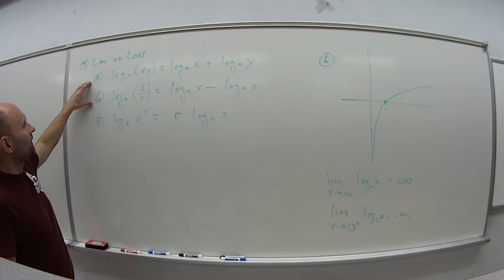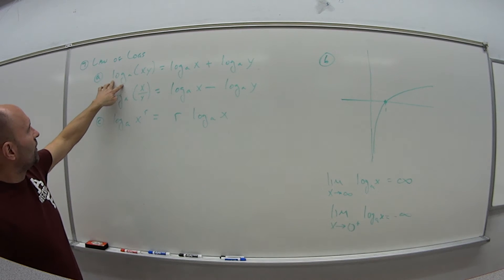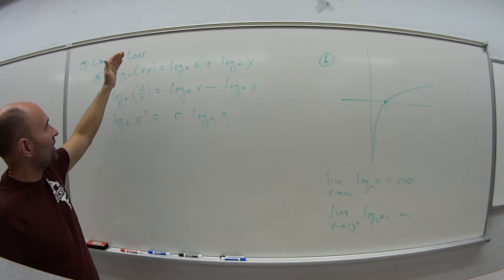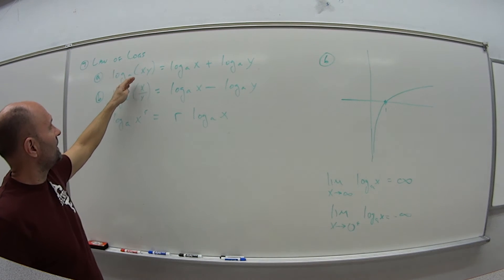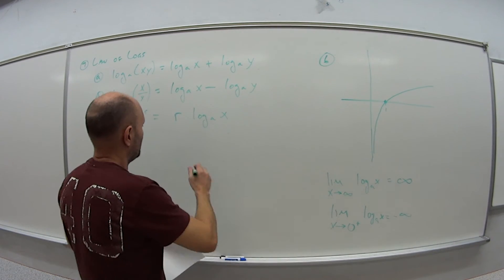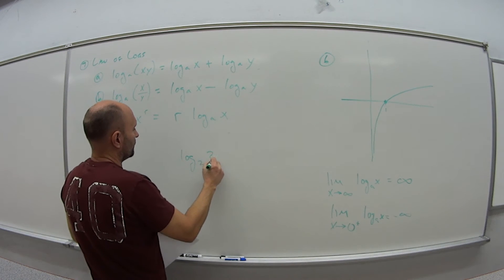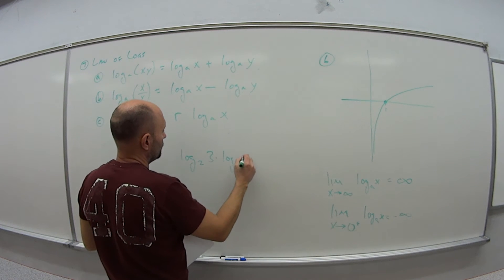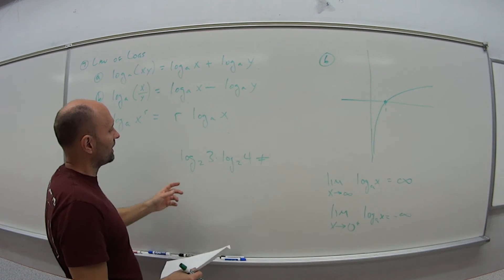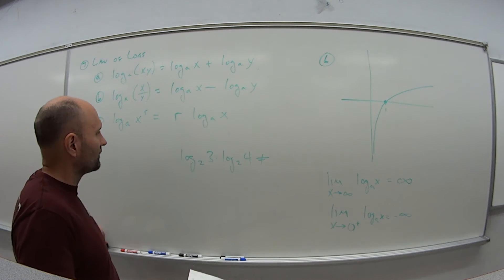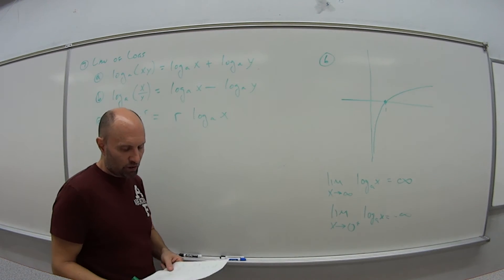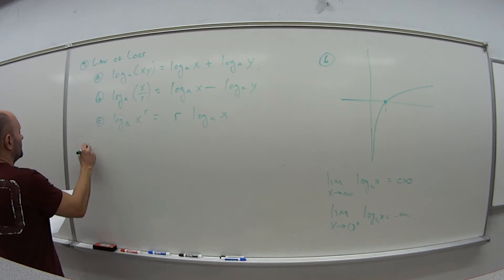And one thing I'll caution you on with A and B, notice this is log of two products, or a product of two functions. So it's not log of A times log base A of X times log base A of Y. That you can't split apart. For example, if I had log base 2 of 3 times log base 2 of 4, this is not the same as just putting a plus sign between these guys. Like, oh, that's right, it's one of my law of logs. That's not true. So you have to be careful with the way that it's written, whether you can actually apply the law of logs.